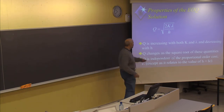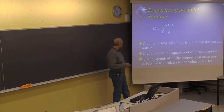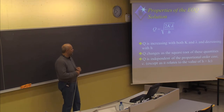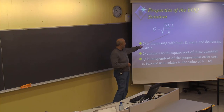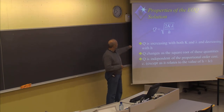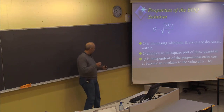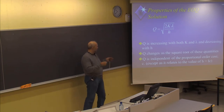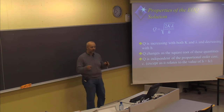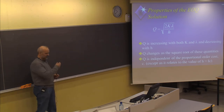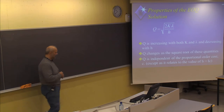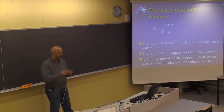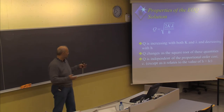Q is independent of the proportional order cost C, which is the unit value. C is what we multiply by the interest rate to get H. In the simple EOQ situation, C is a constant because the unit value of an item is independent of the order size — you pay exactly the same per unit regardless of how many you order. But as we will see shortly, when you receive a discount offer, C becomes relevant and dependent on order size.